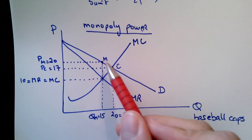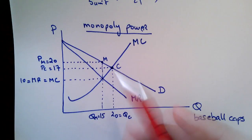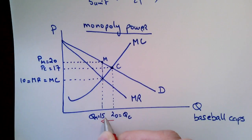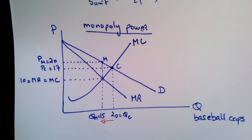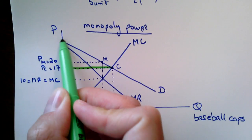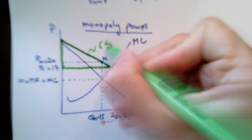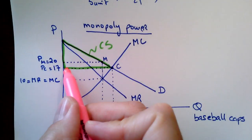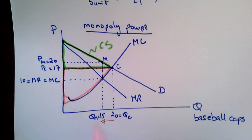Comparing the two outcomes — the competitive outcome versus the monopoly outcome — output has dropped from 20 units to 15 units and the price has gone up from $17 to $20. Before, consumer surplus was everything below the demand curve and above the price line, forming this triangle. Producer surplus was everything below the price line and above the supply curve.